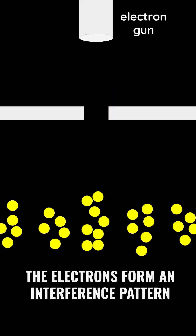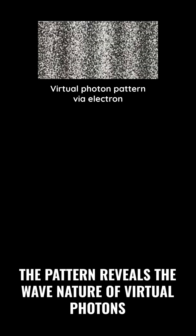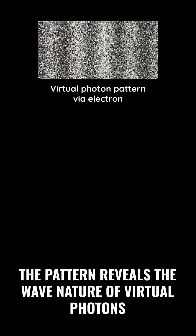The electrons form an interference pattern because they are pushed by virtual photons, which act as waves. The pattern reveals the wave nature of virtual photons, exactly the same as photons in slit experiments.